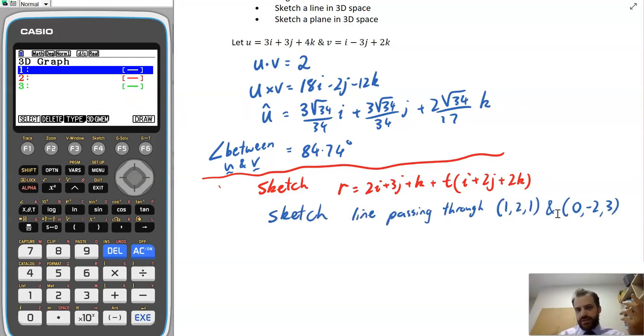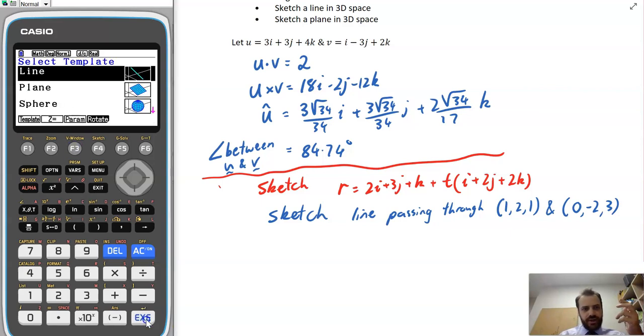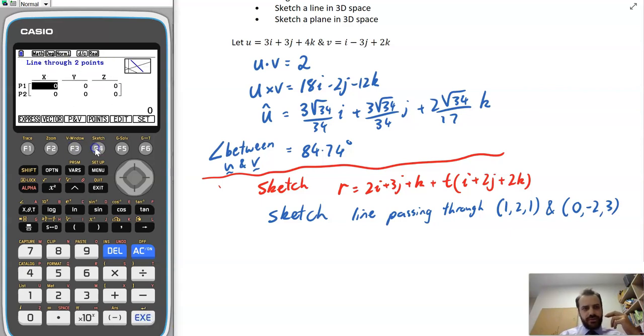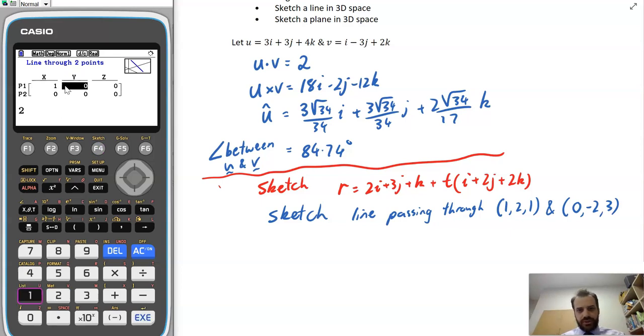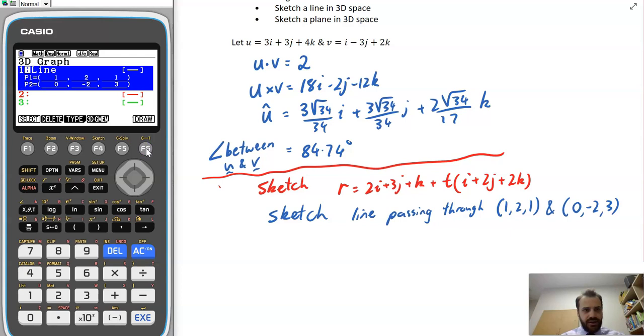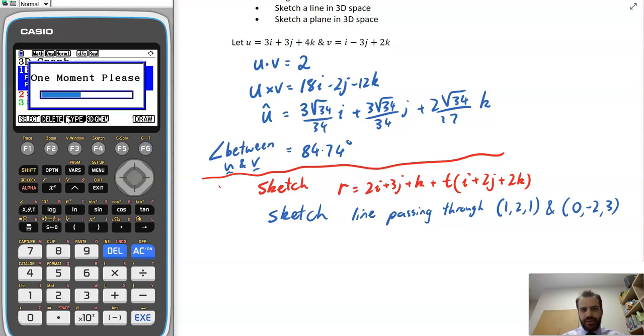You can also sketch a line that's passing through two points. So if I click type here. And I do line again. I can choose two points this time. 1, 2, 1 and 0, negative 2, 3. And it will. If I click set here. And then I draw it. It'll draw it for me.